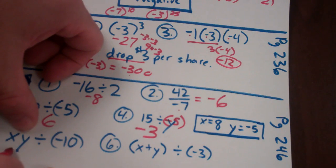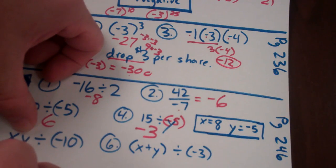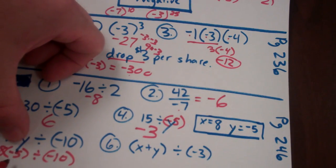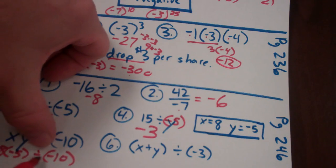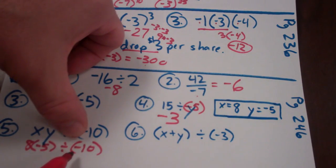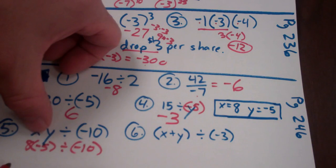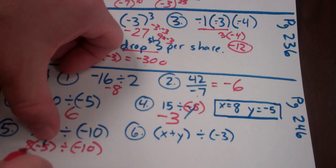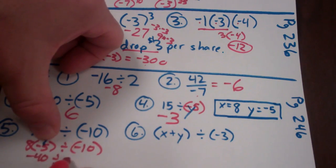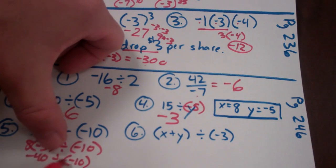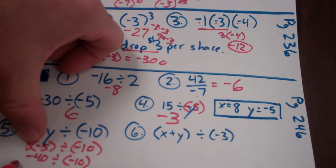Problem five: x times y divided by negative ten, where x is eight and y is negative five. That's eight times negative five divided by negative ten. It's all multiplication and division, so I can count the negatives: one, two — two negatives is even, so the answer is positive. Or step by step: eight times negative five, different signs, is negative forty; then negative forty divided by negative ten, same signs, is positive four.